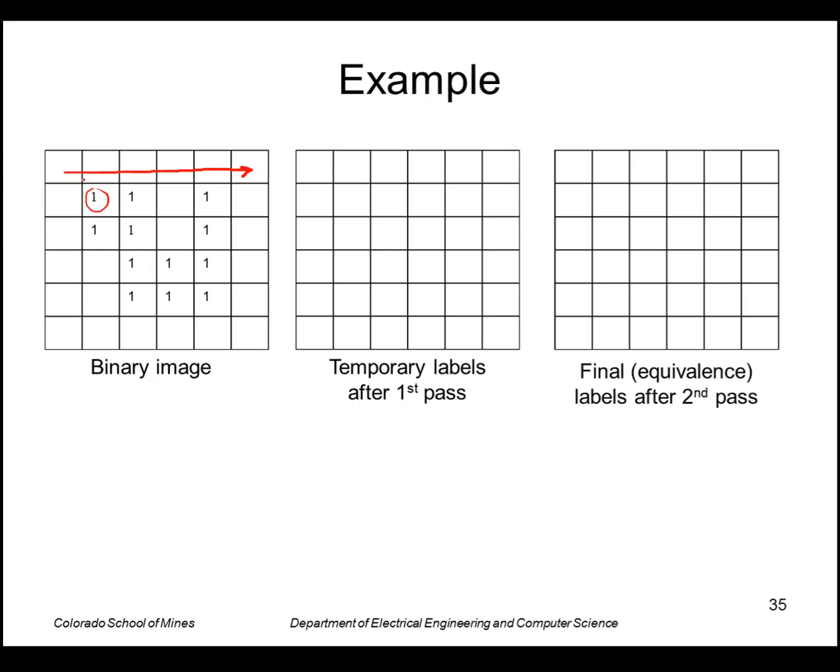So at that point I don't have any labels above and to the left, so I can make up a new label and I'll call it a one. At this point I have a neighbor to the left, so I'll just use his label, which is also a one.